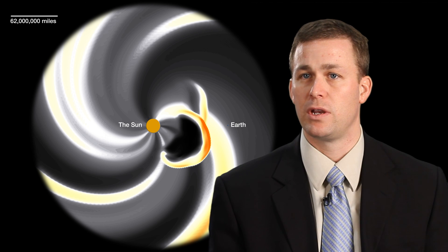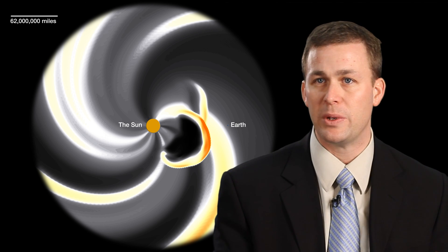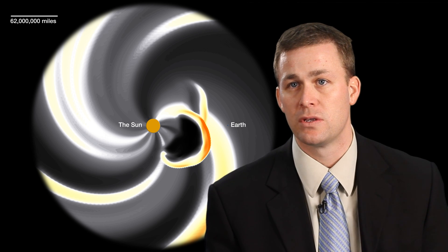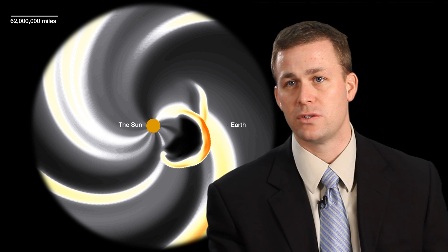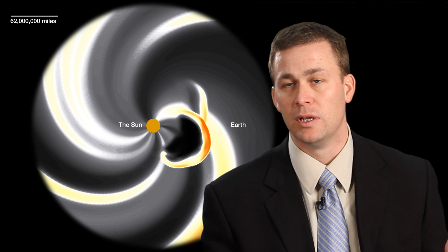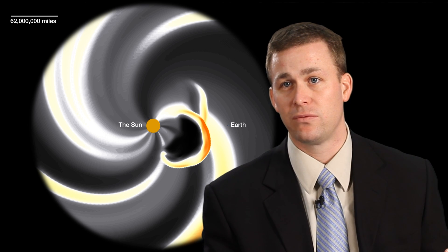The next piece that comes with that is the radiation storm, with energetic particles impinging on satellites or astronauts in space. That can come in tens of minutes. The last piece is associated with the coronal mass ejection, a large part of the atmosphere being blown off of the sun at really fantastic speeds.